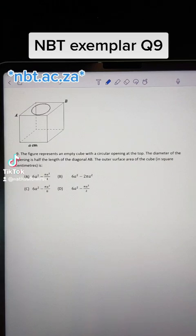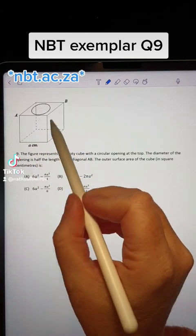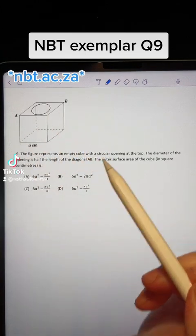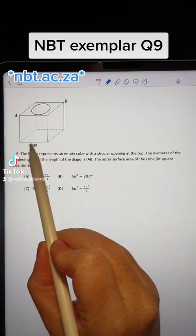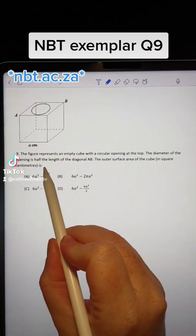This is the NBT exemplar question 9. The question gives us an empty cube with a circular hole cut at the top and they tell us that the length of the sides is a centimeters. The question is asking to work out the outer surface area of the cube.